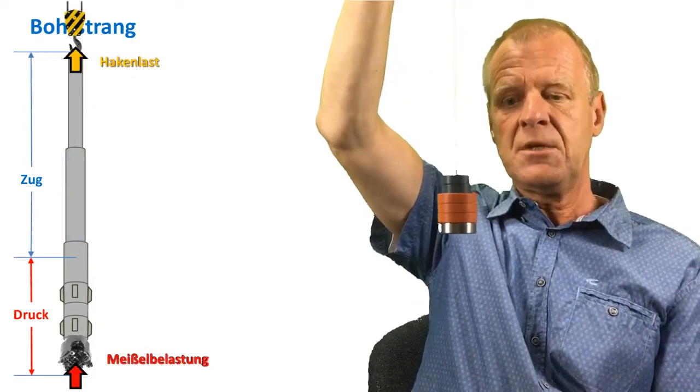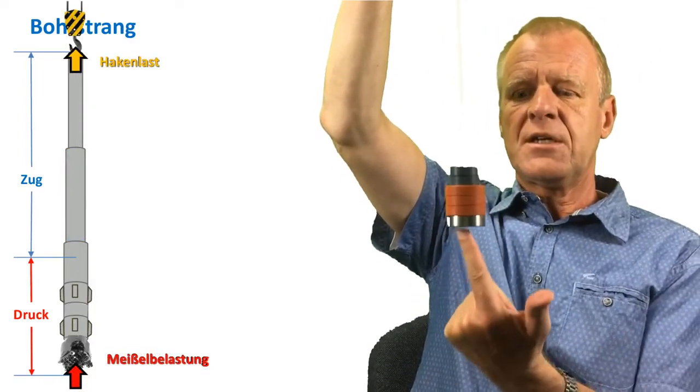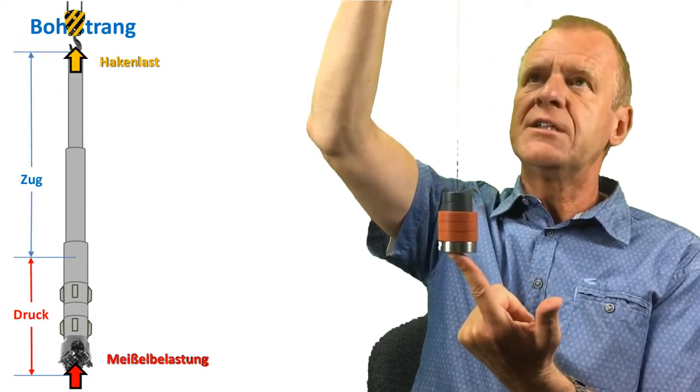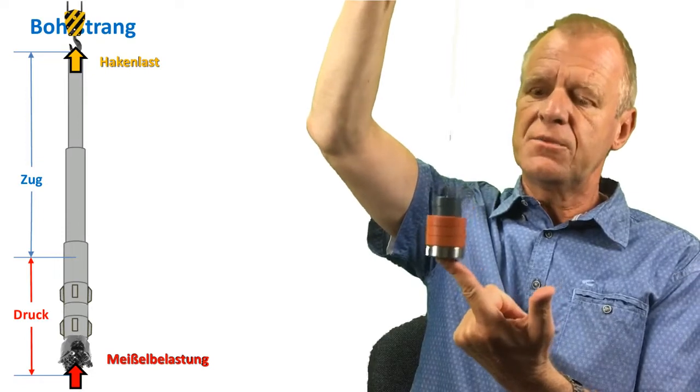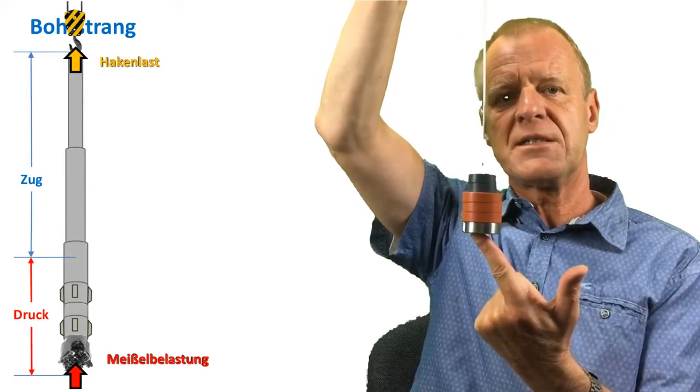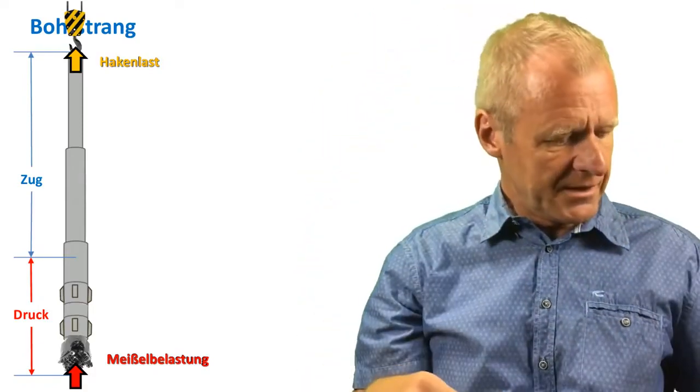Now the driller can easily apply pressure on the bits from above to help us drill faster. By simply adjusting the hook load and the weight on bits, we can apply pressure on the bit to drill faster and straighter holes.